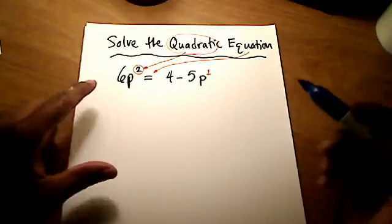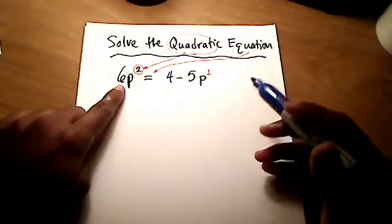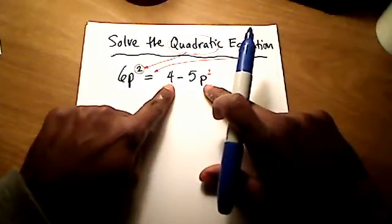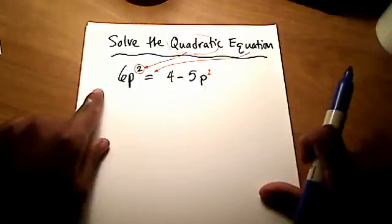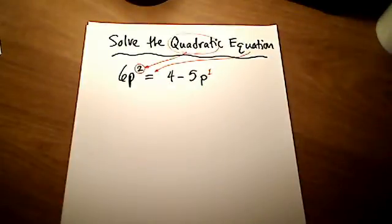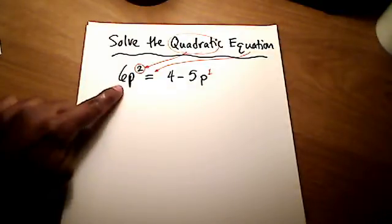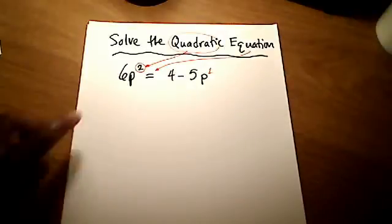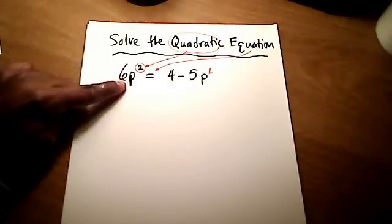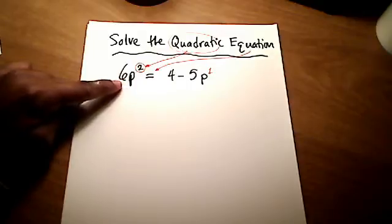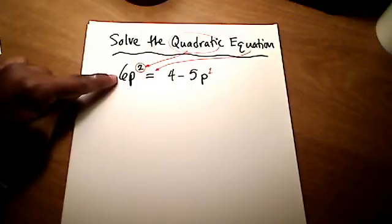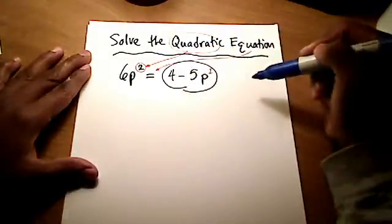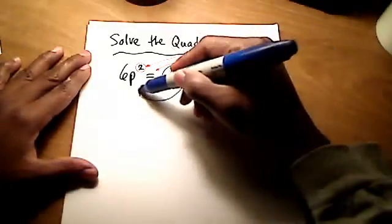But before we do that, this equation is set up a little differently. What we want in this equation is all the stuff on one side and equals 0 all by itself on another side. There are a couple of things we could do to get all the terms together. We could move this 6p² over to the right-hand side, or we could move these two terms, 4 minus 5p, over to the left-hand side.